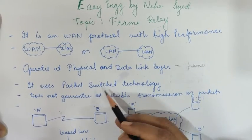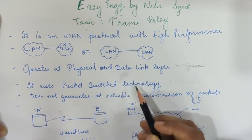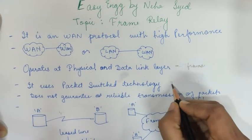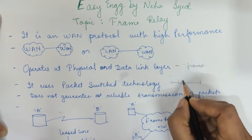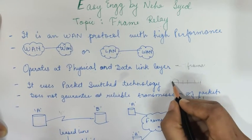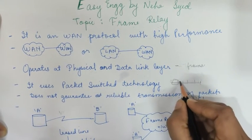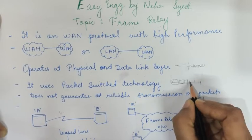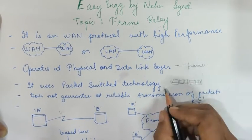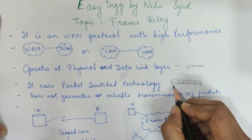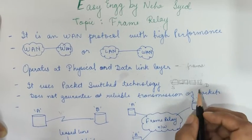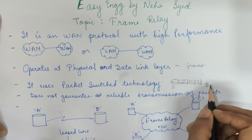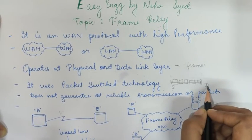Frame relay uses packet switching technology. The data that we want to send is divided into different frames, and those frames are routed from source to destination. They can travel via different routes, but the destination is obviously going to be the same.